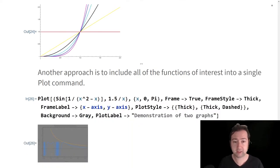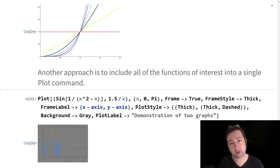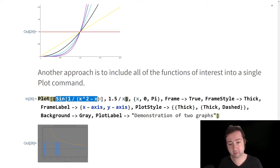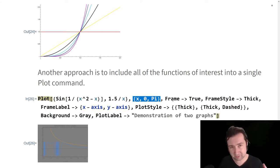Another common approach is that you can actually use plot to do several plots simultaneously. For example, here, you can plot multiple functions simultaneously as long as they have the same domain. And then all of the options that you choose will apply to all of those functions that you've graphed. We're plotting simultaneously the function sine of one over x squared minus x, and also the function 1.5 over x on the domain zero to pi.